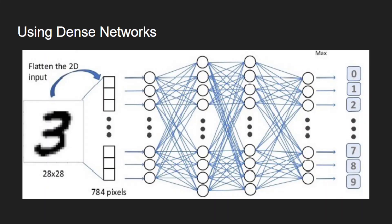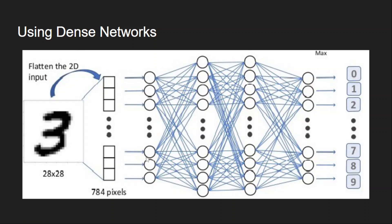For our use case we are using an artificial neural network or dense neural network which has independent neurons in each layer. For this type of network we cannot directly give the image input. So we are converting this image into a single one-dimensional array which will be passed as input to this network. The input layer will have 784 neurons, each taking the input of 1 pixel, and the output will have 10 neurons because this is multi-class classification of 10 classes. The number of hidden layers and neurons in each hidden layer is the user's choice.